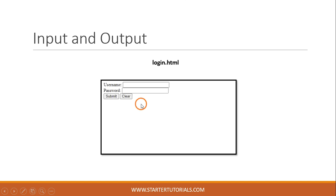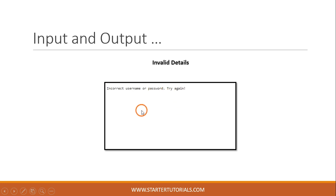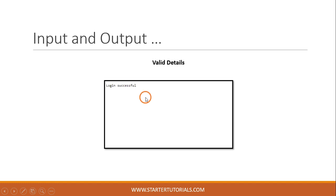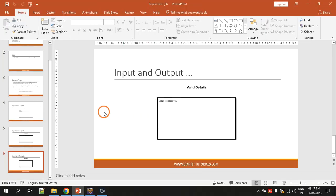This is the input and output for this program. First, we create an HTML web page called login.html with a simple form containing a username field, a password field, a submit button, and a clear button. When the user submits wrong details, we display 'incorrect username or password, try again.' If the username and password match the pre-specified values, we display 'login successful'.